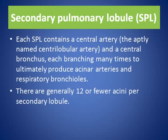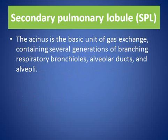Each secondary pulmonary lobule contains a central pulmonary arteriole and terminal bronchiole, and contains about 12 or fewer acini per secondary lobule. The acinus is the basic unit for gas exchange, containing several generations of branching respiratory bronchioles, alveolar ducts, and alveoli.